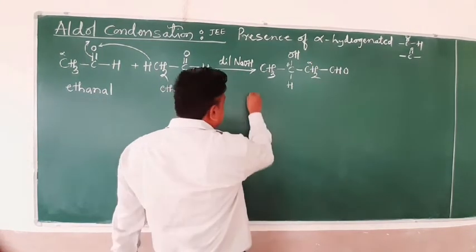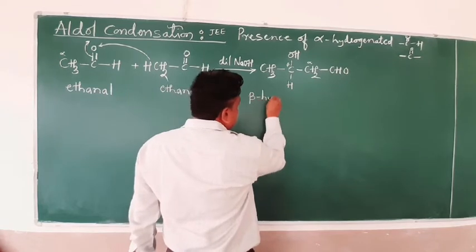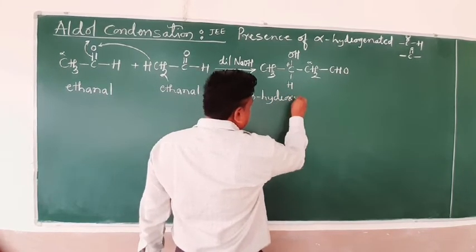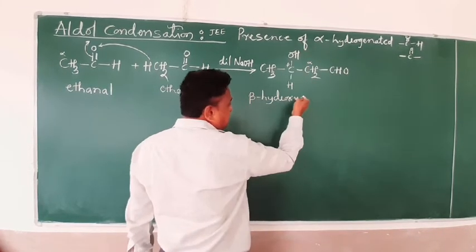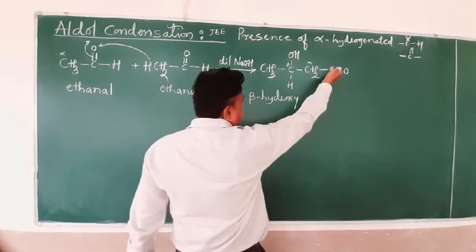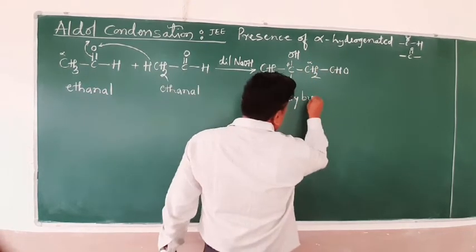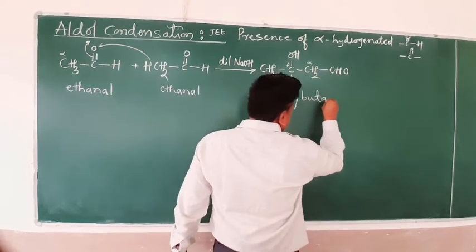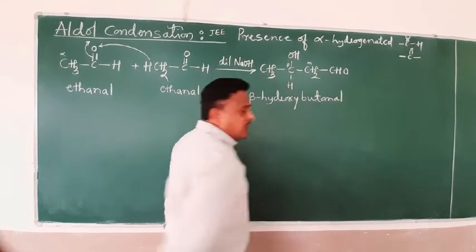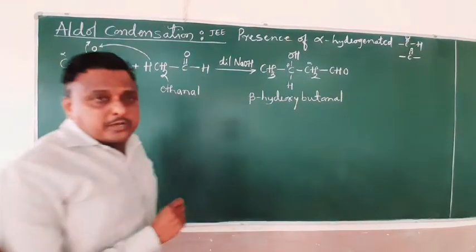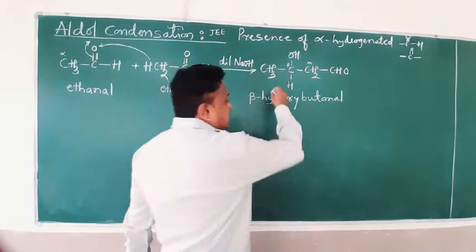What is the name of this compound? It is beta-hydroxy because an OH is attached. Counting the carbons: 1, 2, 3, 4 — the name of this compound is beta-hydroxy butanal, or butyraldehyde can also be used.